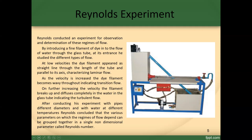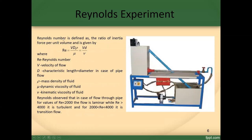After conducting experiments with pipes of different diameters and with water at different temperatures, Reynolds concluded that the various parameters on which the regimes of flow depend can be grouped together in a single non-dimensional parameter called the Reynolds number. Reynolds number is defined as the ratio of inertia force to viscous force per unit volume, given by Re = Vd·ρ/μ, which equals Vd/ν.